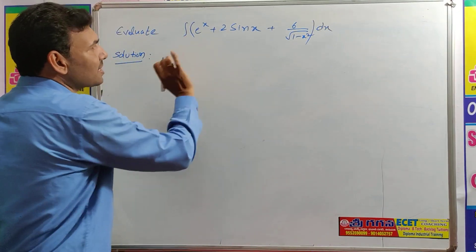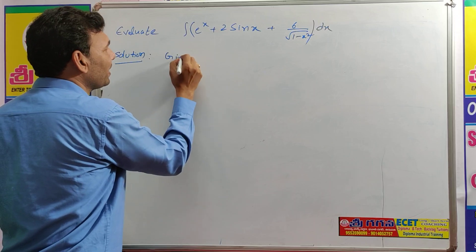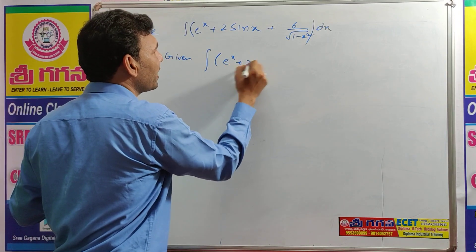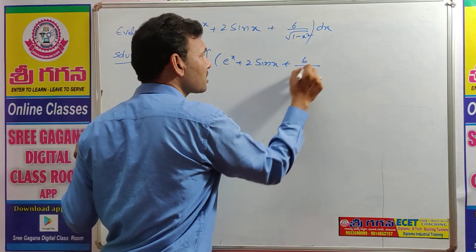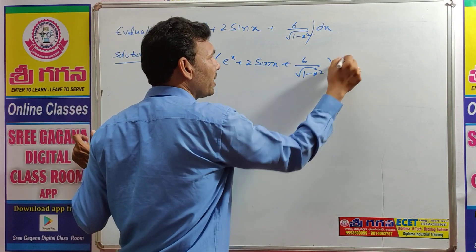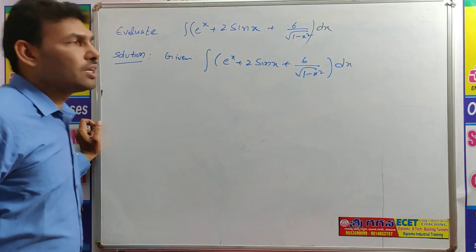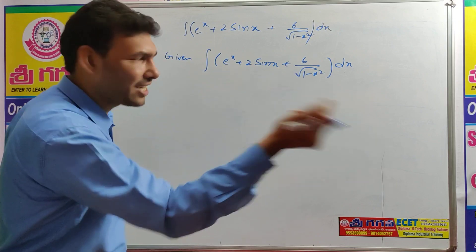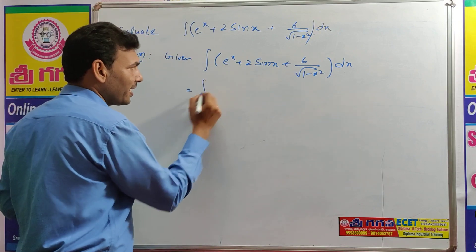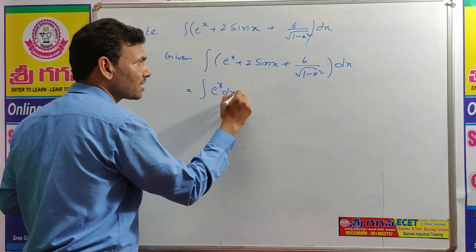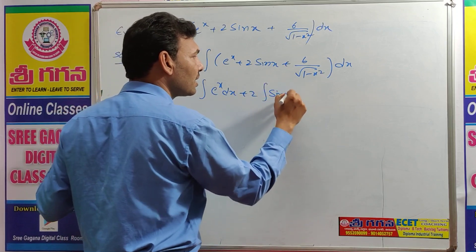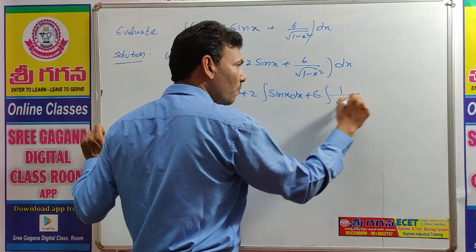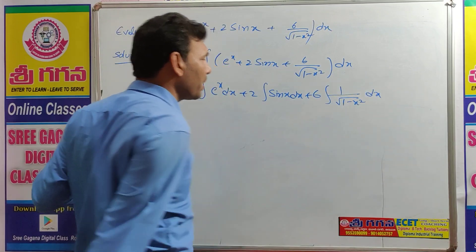The formula is direct. Just write the given integral. Integral of e^x + 2sin(x) + 6 times (1/√(1 - x²)) dx. Separate each term and write the integration symbol for each: integral dx, integral dx. So we get: integral e^x dx + 2 integral sin(x) dx + 6 integral (1/√(1 - x²)) dx.